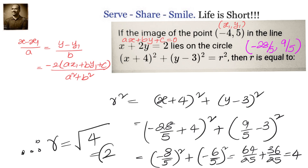How did we find out the image of the point? We used the formula. If you do not want to use the formula, you can find the equation of the line perpendicular to x plus 2y equals to 2 passing through minus 4 comma 5. When you find the point of intersection, you get the foot of the perpendicular. The foot of the perpendicular is the midpoint of the point and its image, because the image is at the same distance from the straight line as the point. From that you can calculate the coordinates of the image. But if you do not have time and want to finish it fast, use this formula.